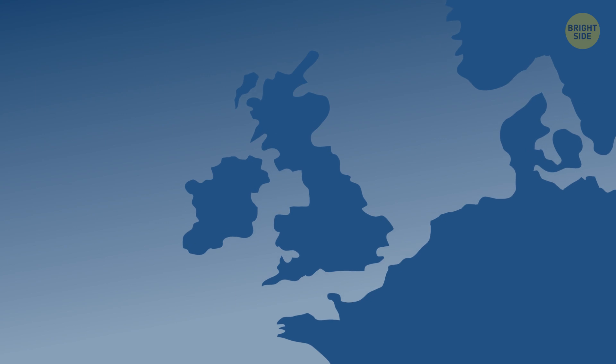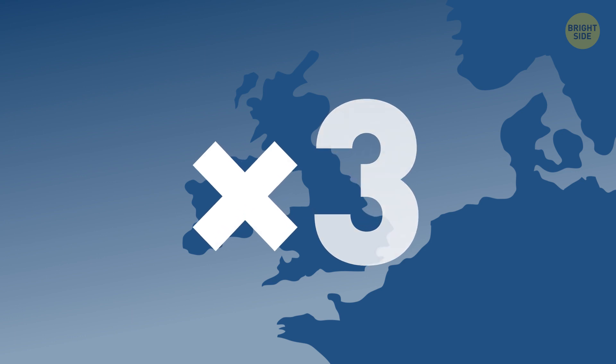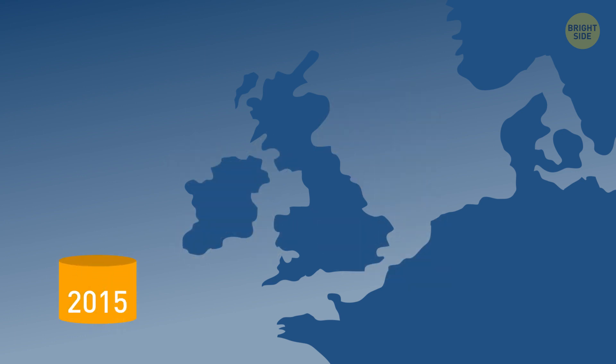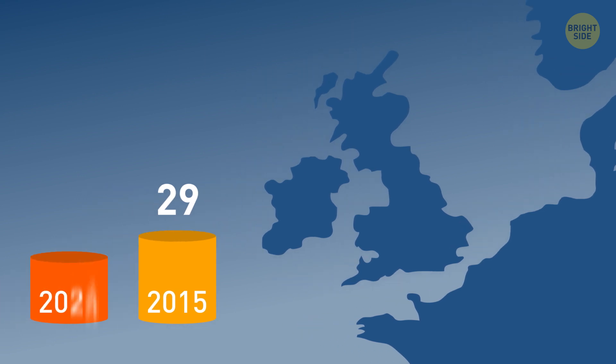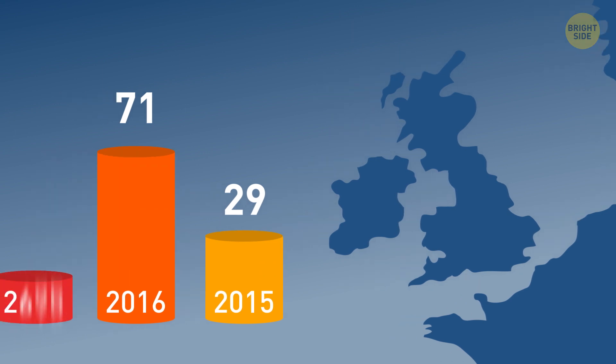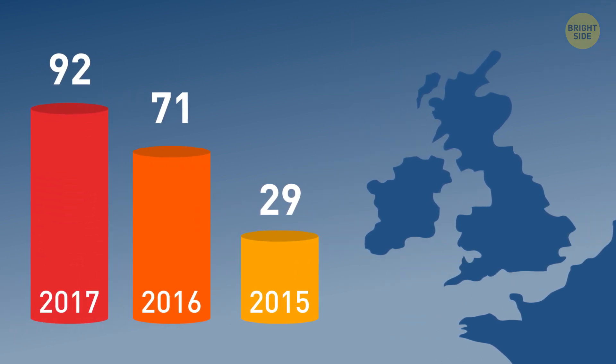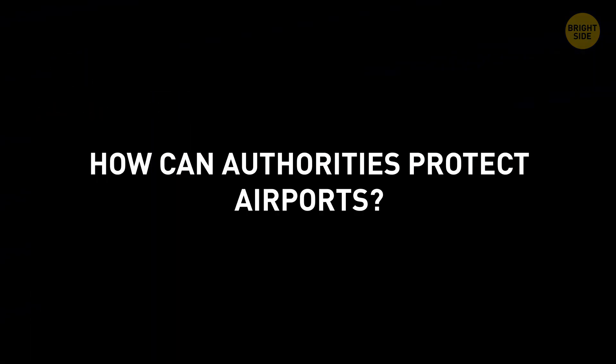And such near incidents between airplanes and drones aren't rare in many regions of the world. For example, these days in the UK, three times more airplane quadcopter encounters happened than in 2015. And while in 2015, 29 drones almost crashed into passenger jets, in 2016, this number was already 71. In 2017, there were 92 near misses.